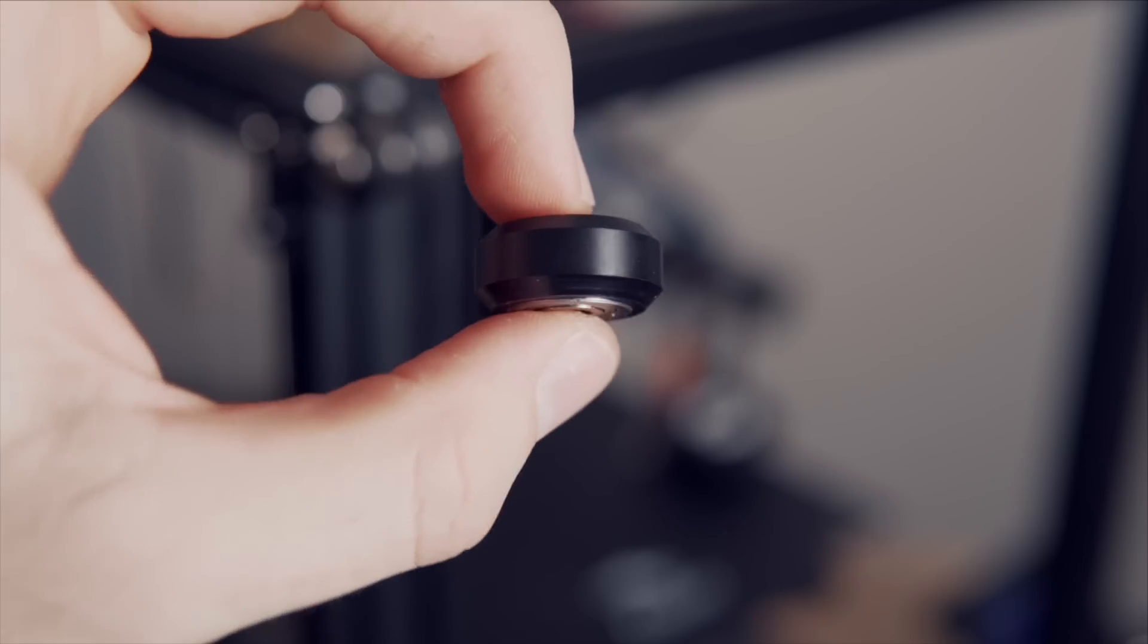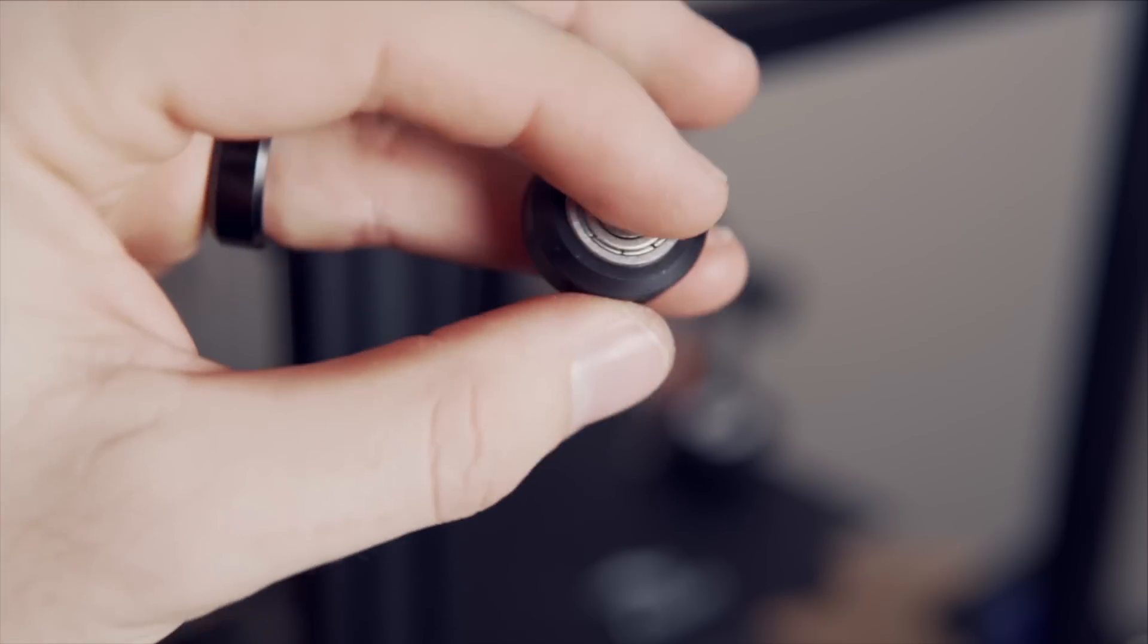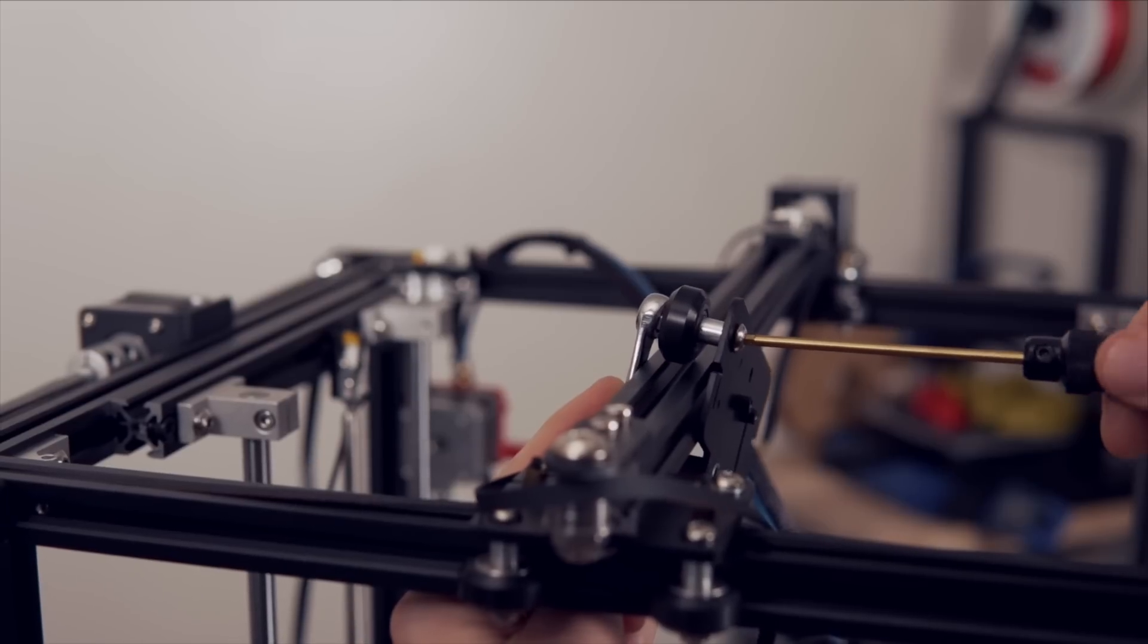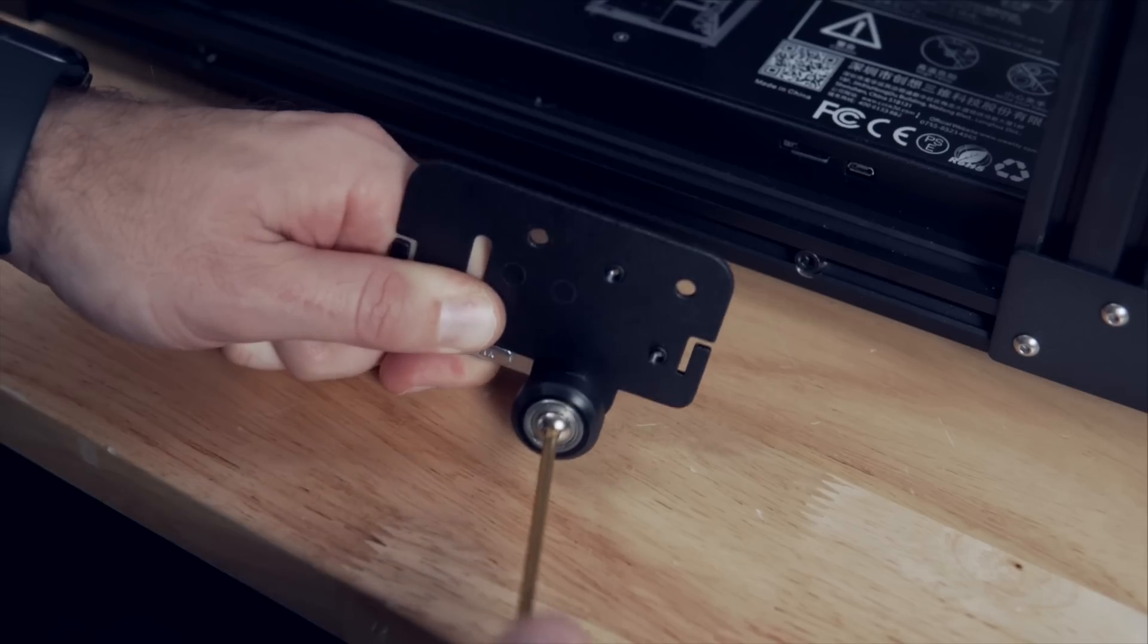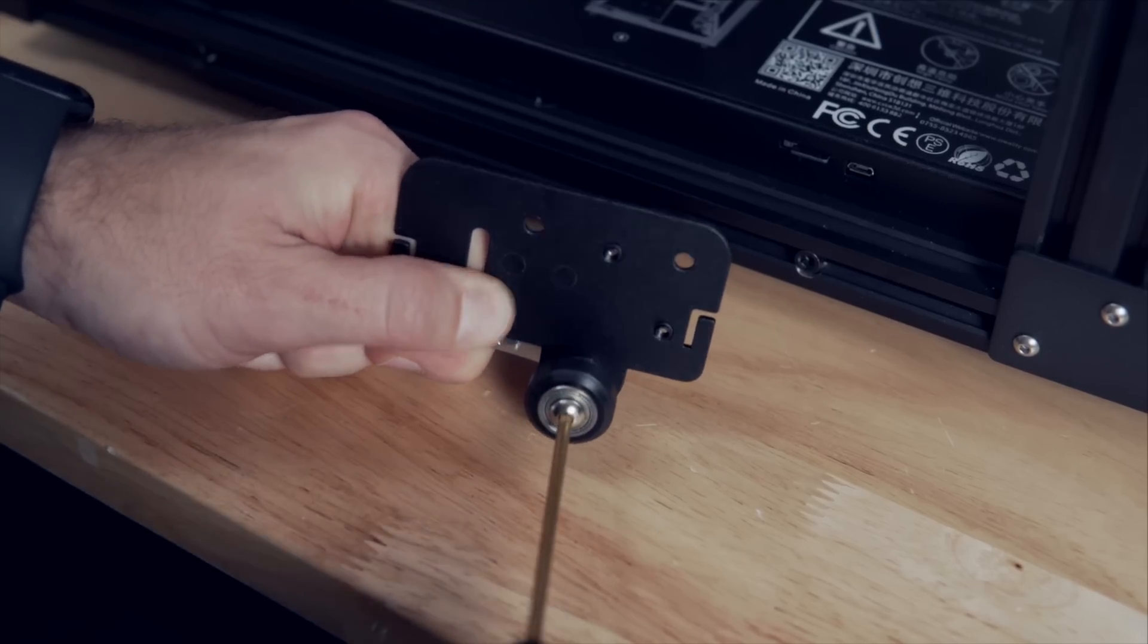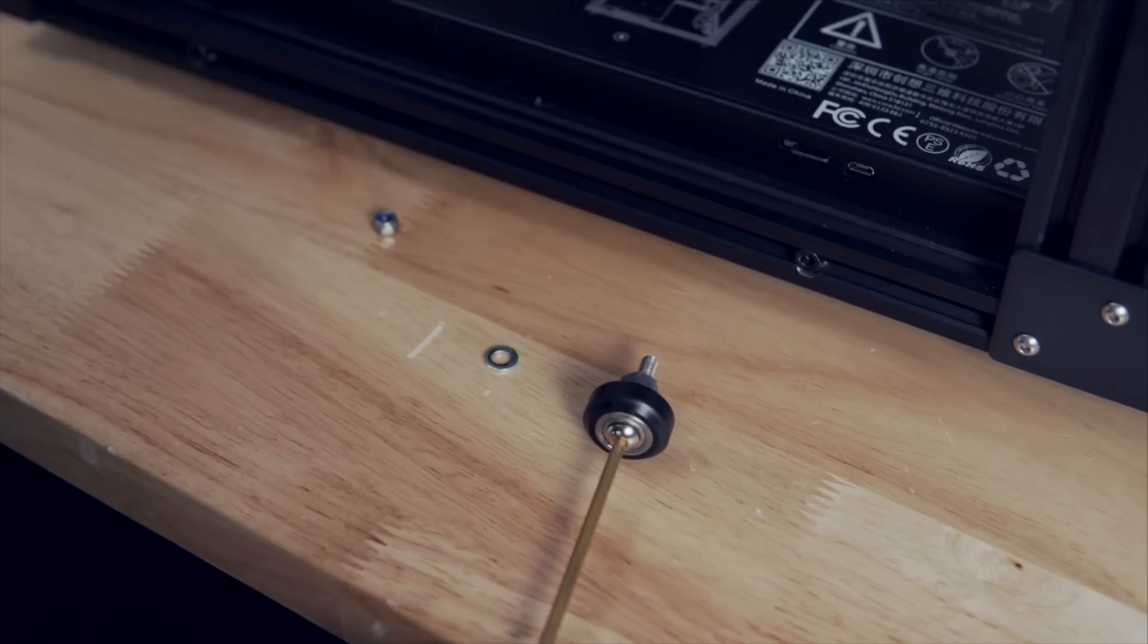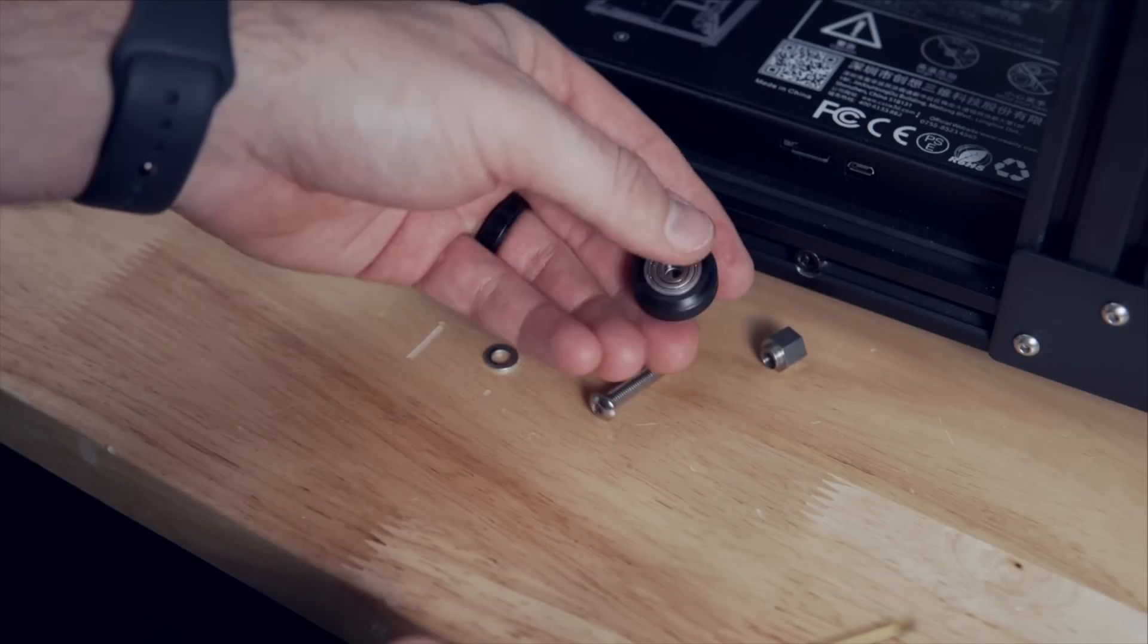We don't need to keep the screws or the washers, but we are going to be reusing all of the roller wheels, so make sure that you put those somewhere safe. Once you've got all three wheels off, you can also put the back plate off to the side. We will not be using that as the NG is going to be replacing that.